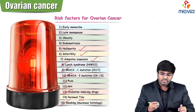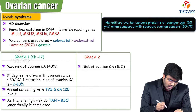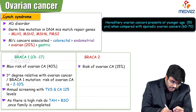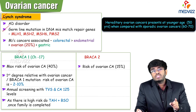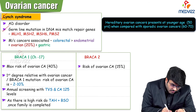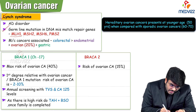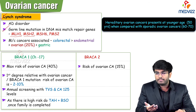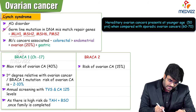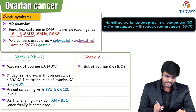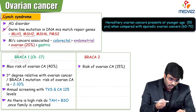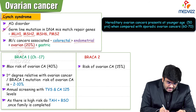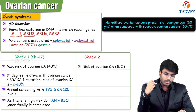Lynch syndrome is an autosomal dominant disorder with mutation of DNA mismatch repair genes. The most common mutation is MLH1 gene mutation and MSH2 gene mutation. Because of these mutations, the female can develop multiple cancers. The most common is colorectal cancer, followed by endometrial cancer, then ovarian cancer. Having Lynch syndrome increases the risk of getting ovarian cancer by almost 20%.